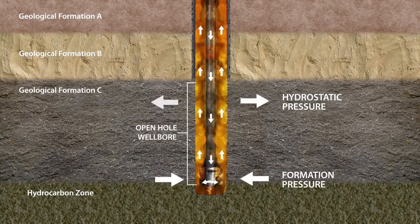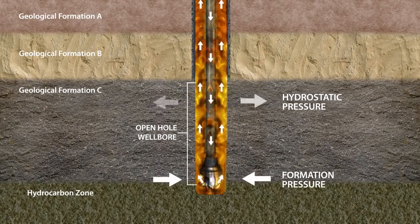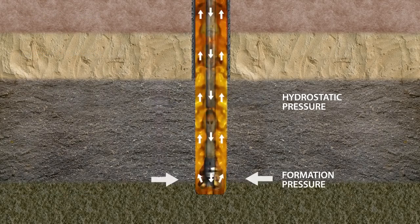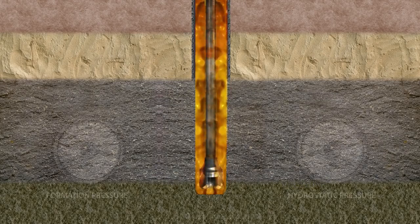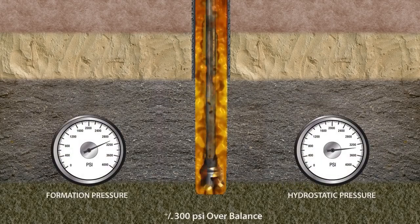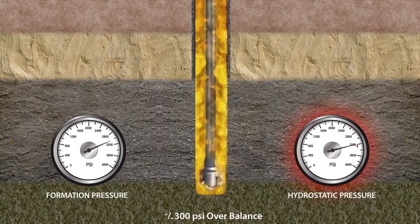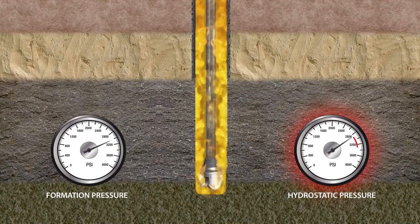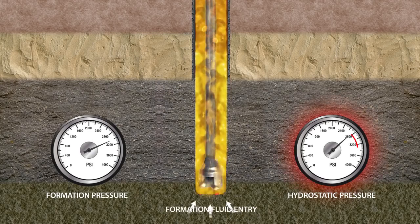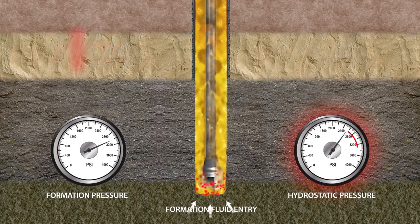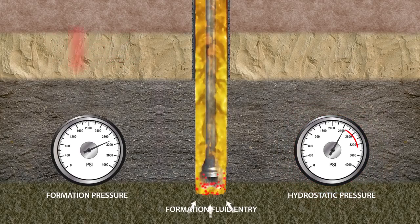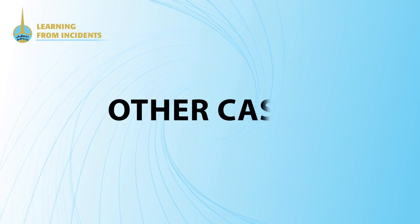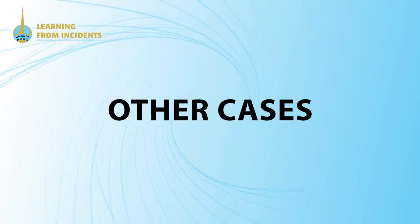This fluid column must be monitored and maintained during drilling and tripping, to prevent formation fluids from entering into the wellbore. During drilling, if the fluid column is not maintained with adequate mud density, making the formation pressure more than the hydrostatic pressure, formation fluids will find a way into the wellbore and a kick will occur. In this case, the well must be secured and killed. There are other cases when a kick can occur.